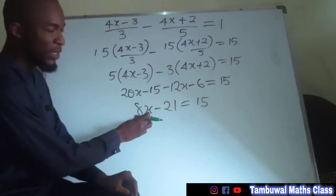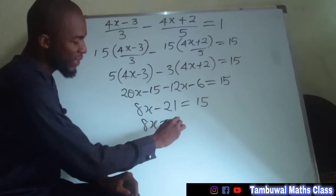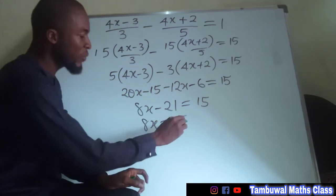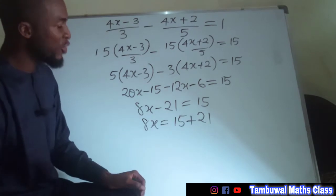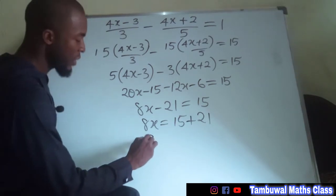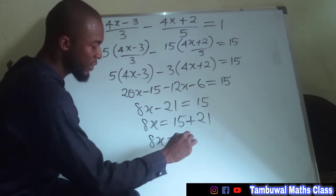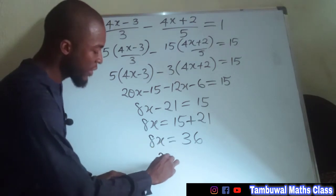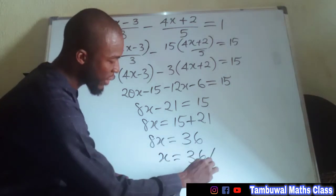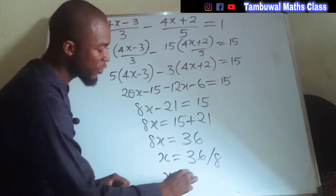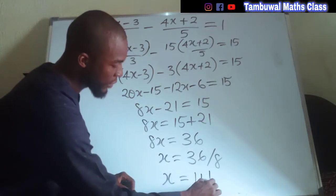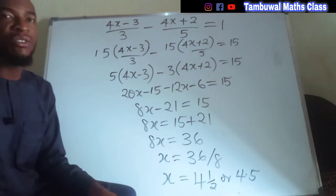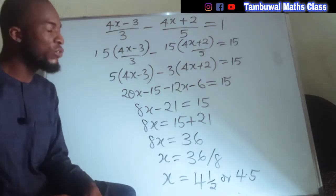Now we are going to take the constant to the right-hand side, leaving only 8x here. If a term crosses the equality sign, whatever sign is attached to it will change to its opposite — so negative 21 becomes positive 21. Adding them together, 8x equals 36. To find the value of x, we divide both sides by 8, so x equals 36 over 8.